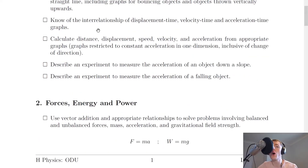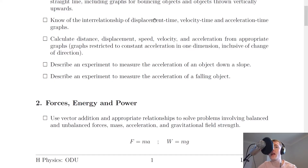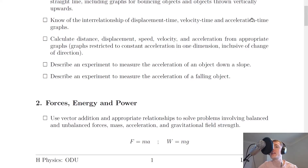Next, you need to know the interrelationship of displacement-time, velocity-time and acceleration-time graphs. To go from a displacement-time graph to a velocity-time graph, or from a velocity-time graph to an acceleration-time graph, you take the gradient of the line. Whereas to go in the reverse direction — from an acceleration-time graph back to velocity-time, or velocity-time back to displacement-time — you find the area under the graph, specifically the area between the line and the x-axis.